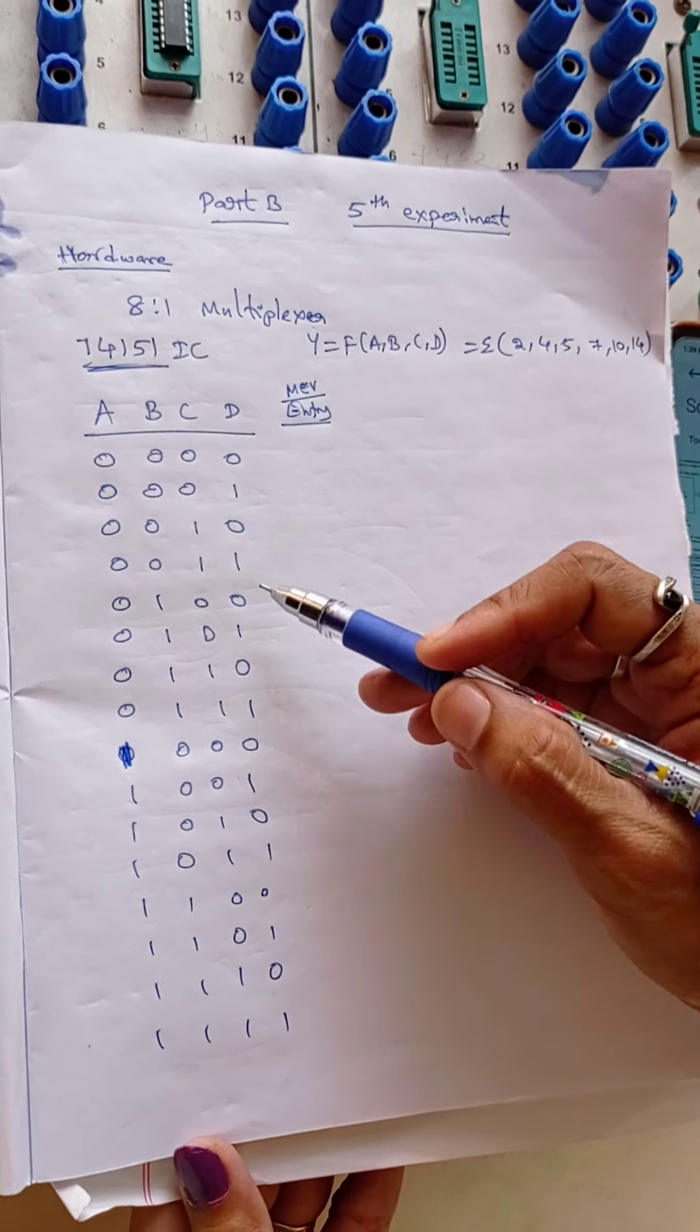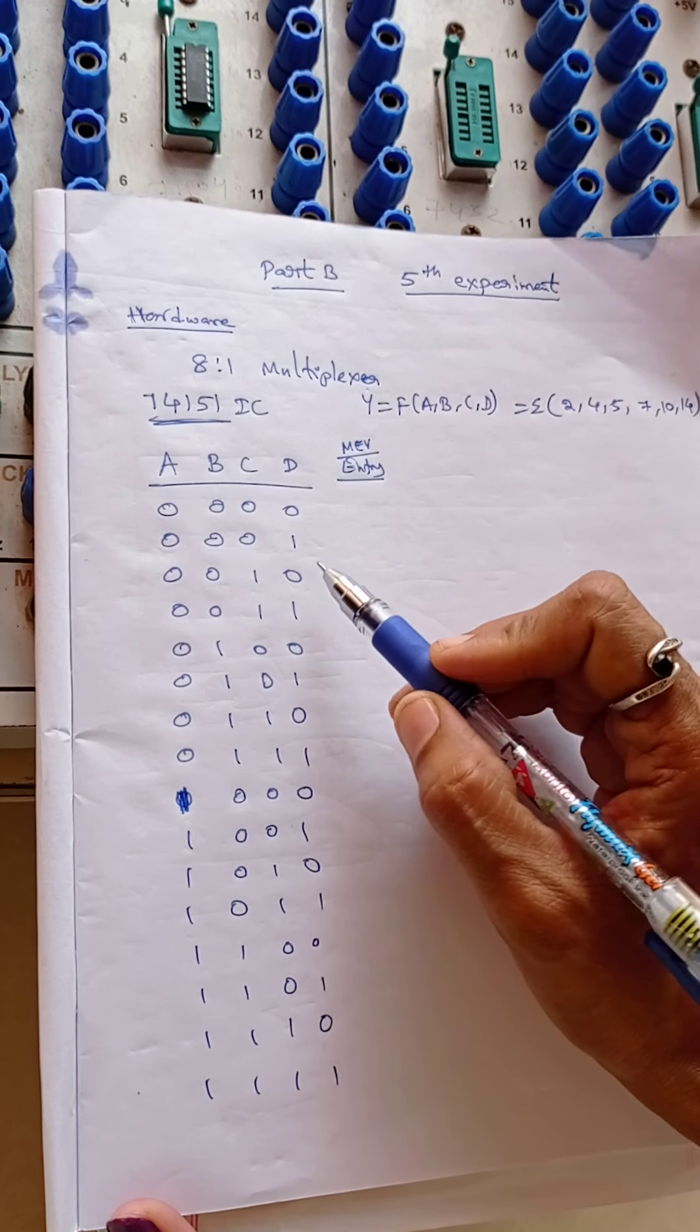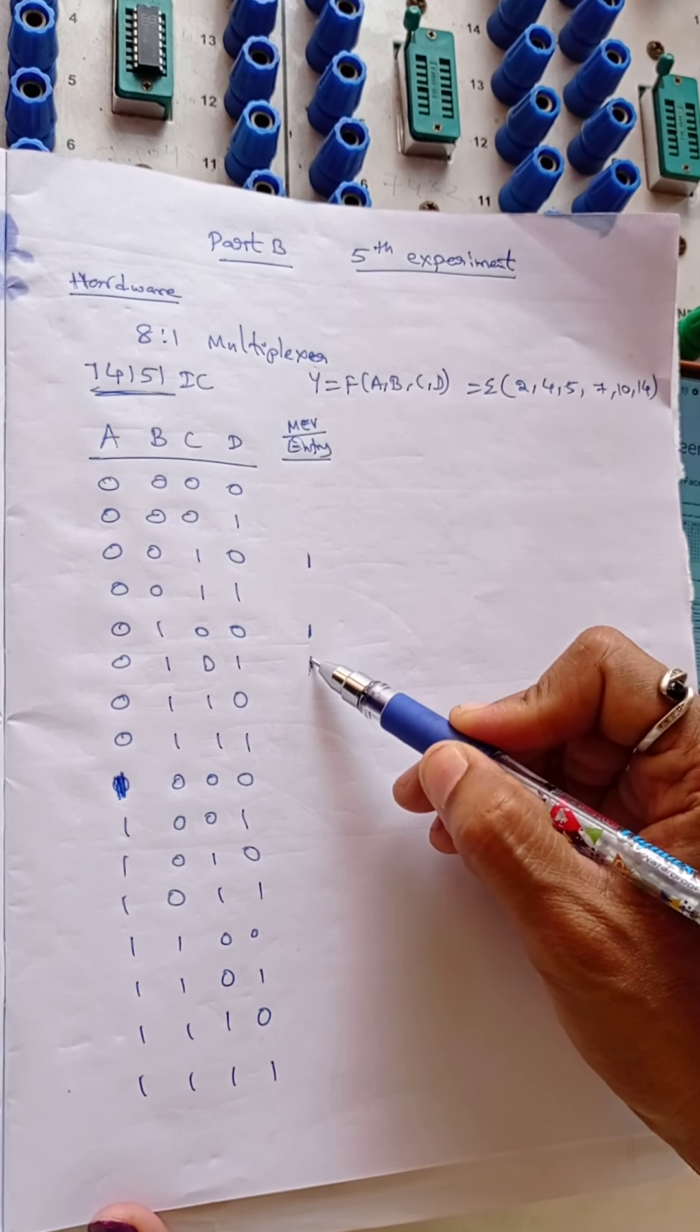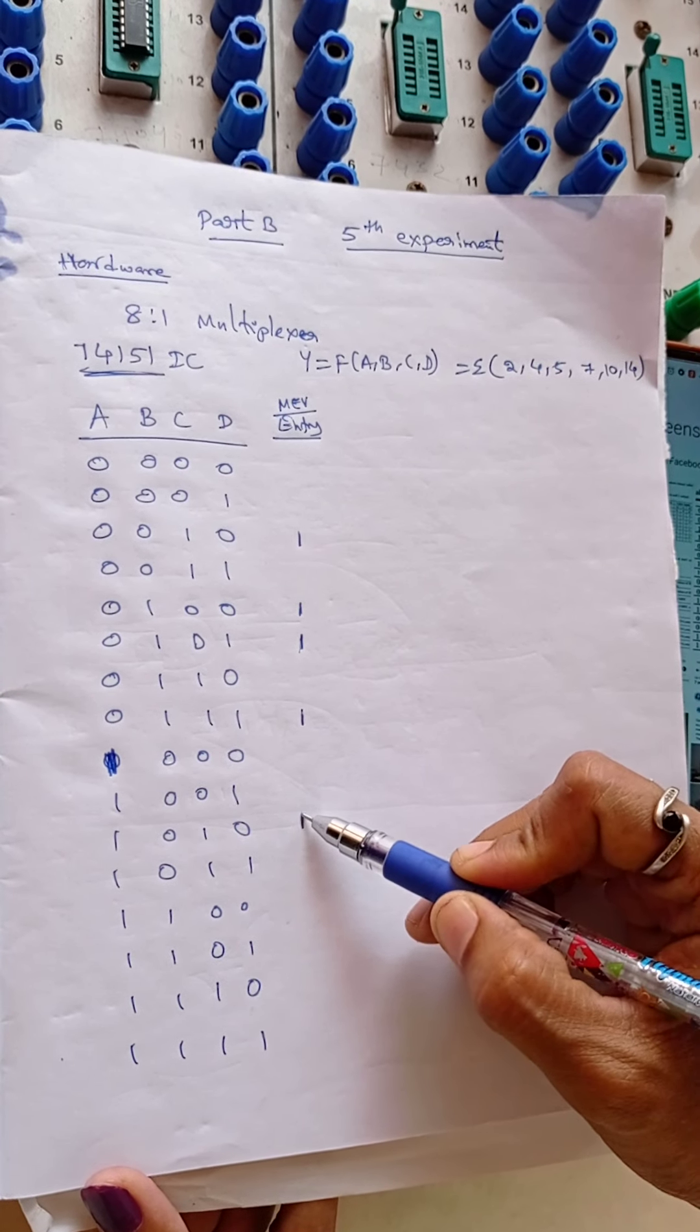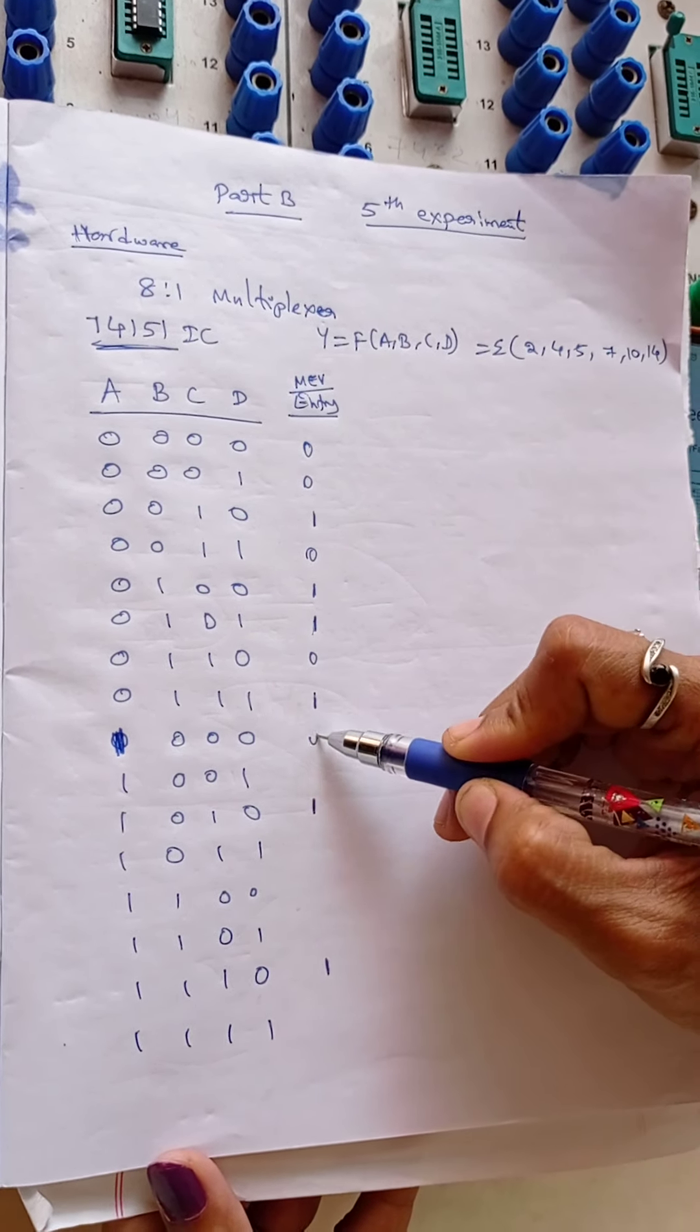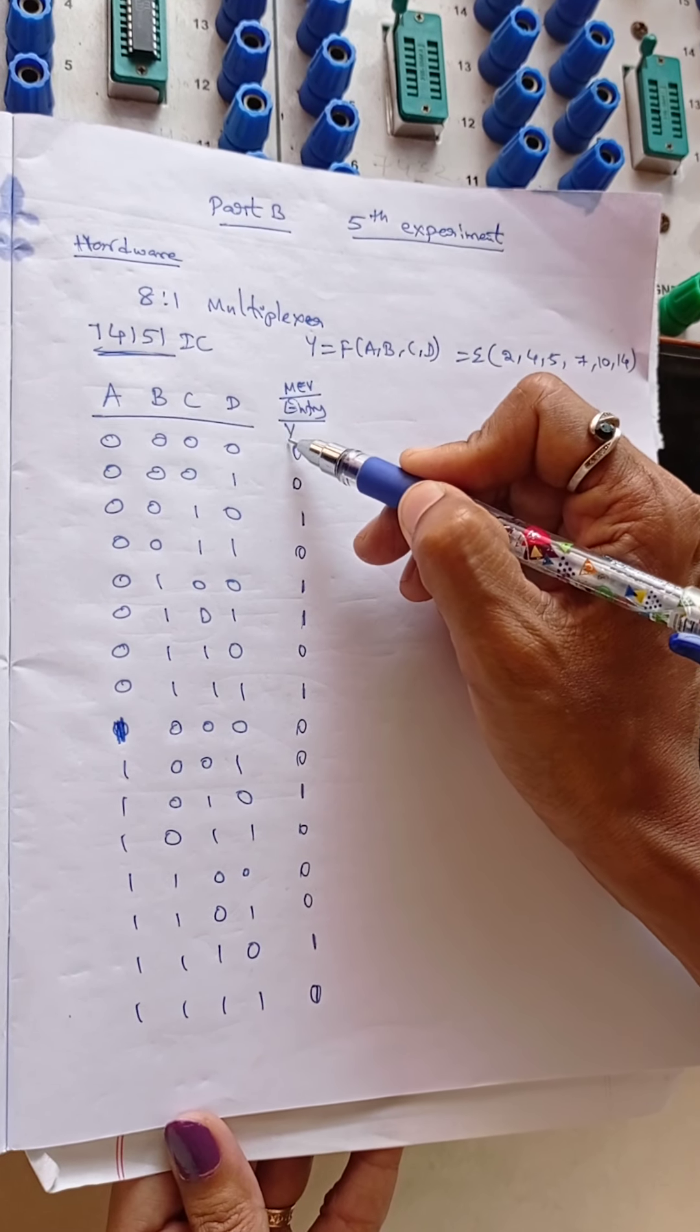Now we are entering the variable, see here for 0, 1, 2 we should get 1 and 4, 5, 7, 10, 14. For this the output should be high and for remaining it should be low. Now this is the Y output.